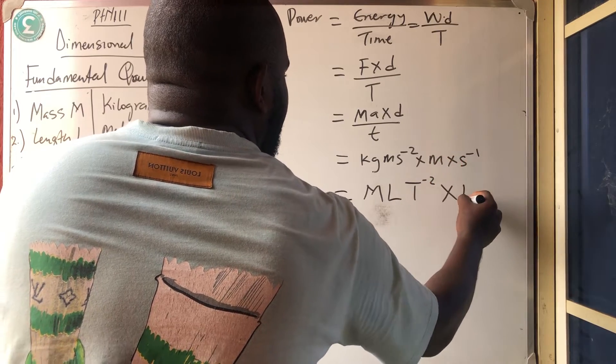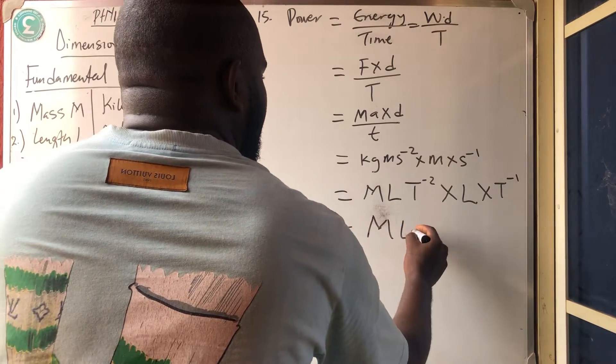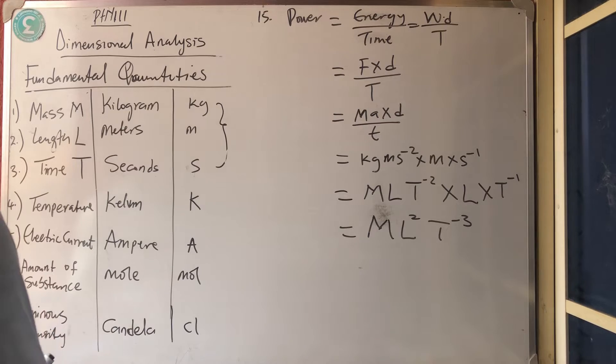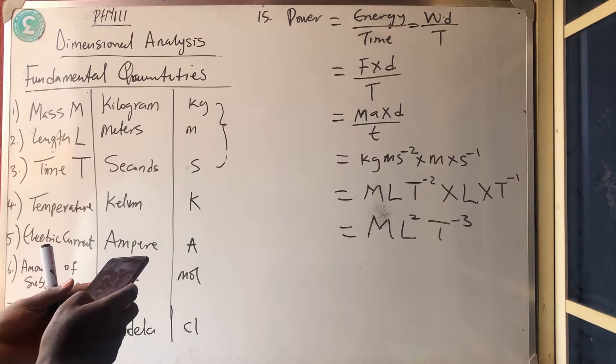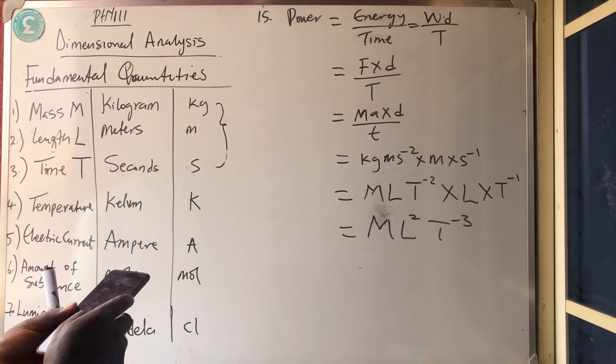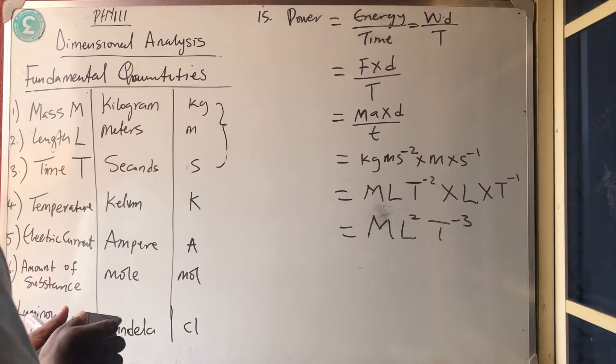Times meters again length. Seconds again. So I'm having M L2 T minus 3. That is for power. So the next one we are talking about is, we've done velocity meter per second. That is L T minus 1.